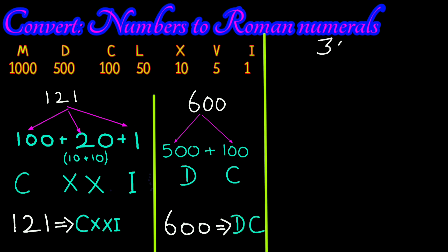Next, for 3000, we can split as 1000 plus 1000 plus 1000. So we can write this as MMM.